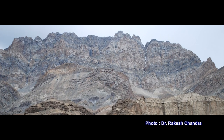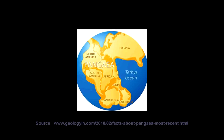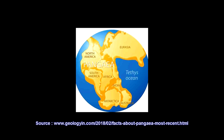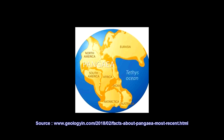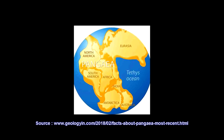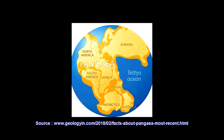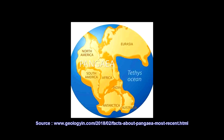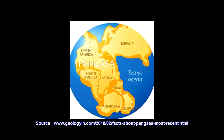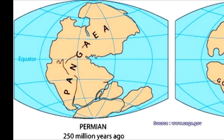During Permocarboniferous times, the formation of Laurasia land and Gondwana land took place. Up to Permocarboniferous times, there was one landmass — Pangea — surrounded by the Panthalassa sea.